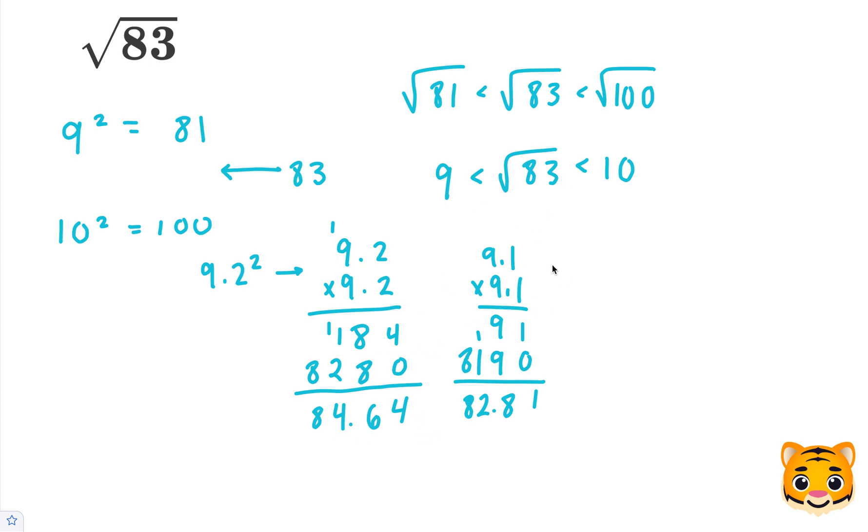So this 9.1 representing 9.1 squared gives us something closer to 83. Therefore, we can approximate the square root of 83 as about 9.1.